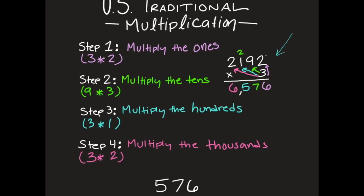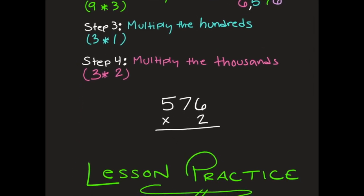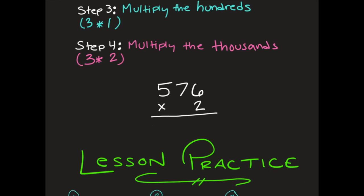I'm going to go ahead and move down here, and I'm going to do one more problem with you. And I have 576 times two. So again, my first step, multiply by my ones. Two times six is 12. So I'm going to take that one of the 12, which is in the tens column, and put it in my tens column and put that two down in my ones.